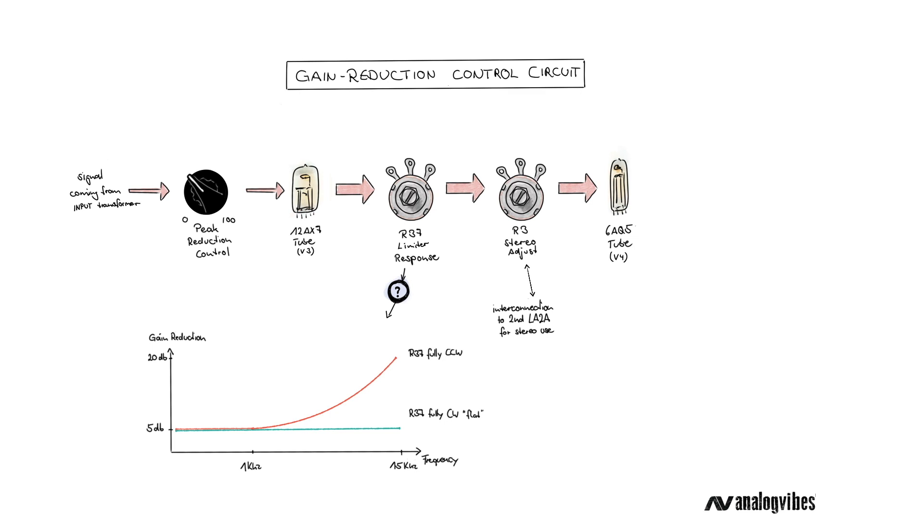Now, this 6aq5 tube supplies the necessary audio voltage to drive the electroluminescent panel in the T4B cell, which, as mentioned before, is actually responsible for the smooth compression character of the LA2A.